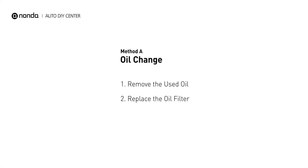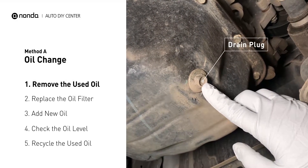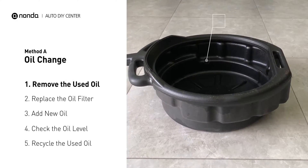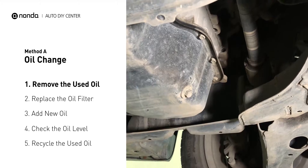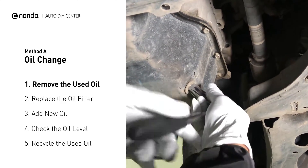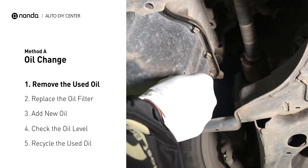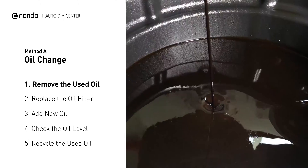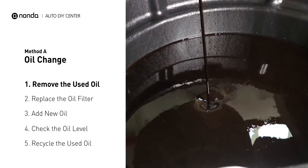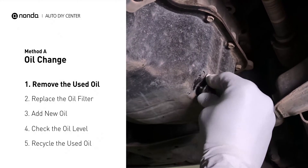Method A: Oil Change. Locate the oil drain plug on your vehicle and place an oil collection pan underneath it. Use a socket ratchet to remove the plug from the oil pan on your vehicle. Once the plug is removed, the oil should start flowing out into your collection pan. Once all the oil is drained, replace the drain plug and tighten it back on.